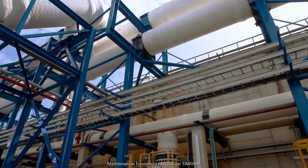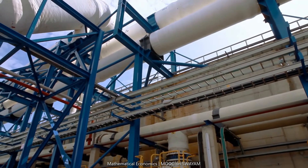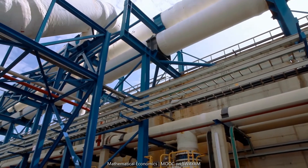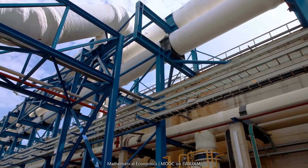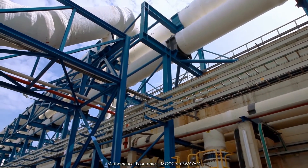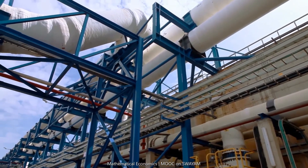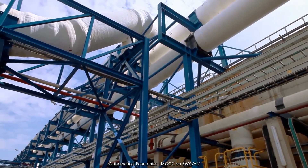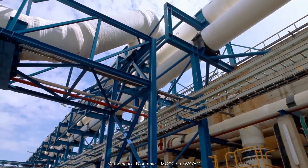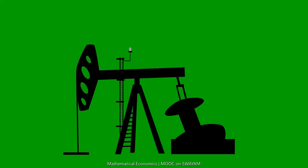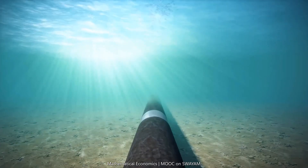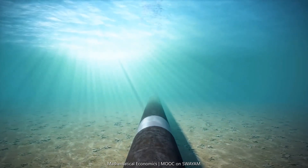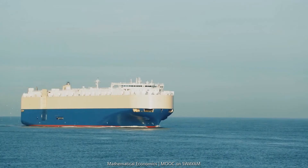An oil refinery produces a large number of products. Crude oil, or unrefined oil, is extracted from the ground and is transported to the refineries through pipelines or large ships.